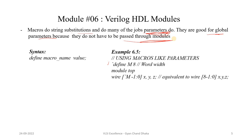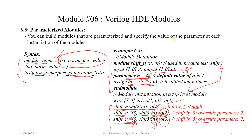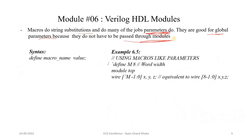This is an important distinction: while instantiating a module, we can pass the parameter value, but we cannot pass macro values. So if we have some constant such that its value is used globally — meaning in multiple files — in that particular case, we can consider using macros.